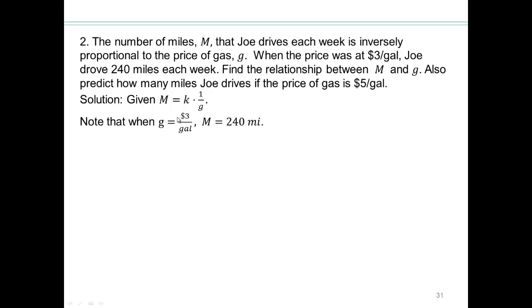So we have g is $3 per gallon, m is 240. Put that in here. 240 equals k times 1 third, solve for k. So multiply both sides by 3, and we got k is 720. So here's our equation.